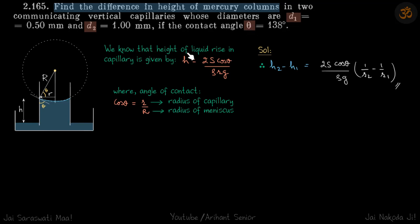We know height of the liquid rise in capillaries is given by 2s cos θ by ρrg, where r is the radius of the small capillary and angle of contact cos θ is given by small r by capital R. So r is the radius of capillary and capital R is the radius of meniscus.